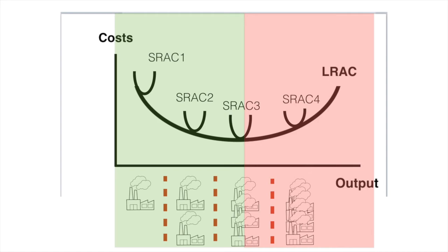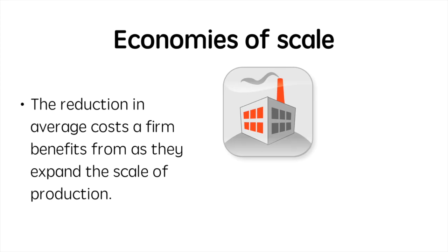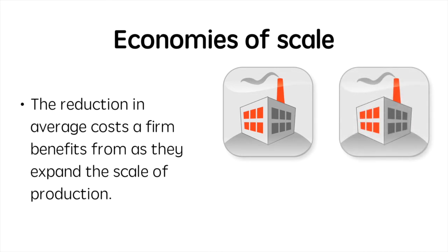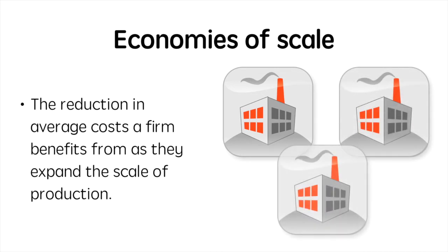Before we go any further, let's define economies of scale. Economies of scale occur when a firm expands in scale and is able to reduce its average cost of production. This occurs because certain cost savings are associated with expansion. We'll look at six internal economies of scale and also consider how average costs rise beyond a certain level of output due to diseconomies of scale.